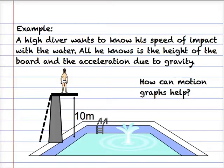Let's look at an example of a falling object. A diver climbs to the top of the high board, which is 10 meters above the water surface. He knows the height of the board is 10 meters, but what he actually wants to know is how fast he hits the water.